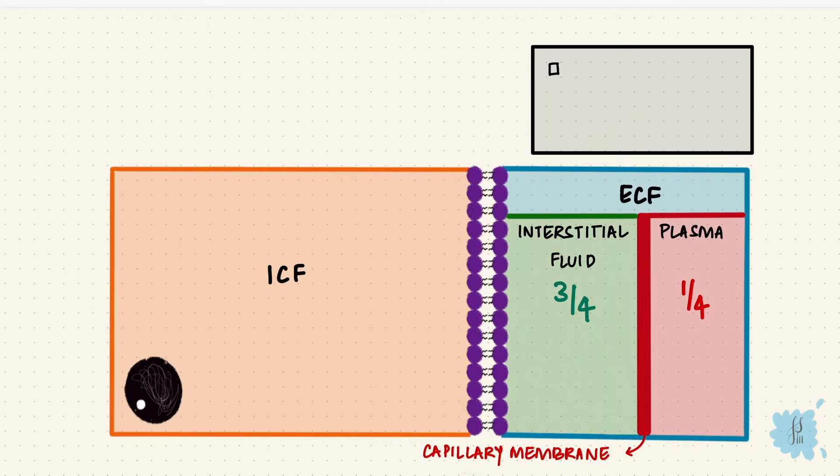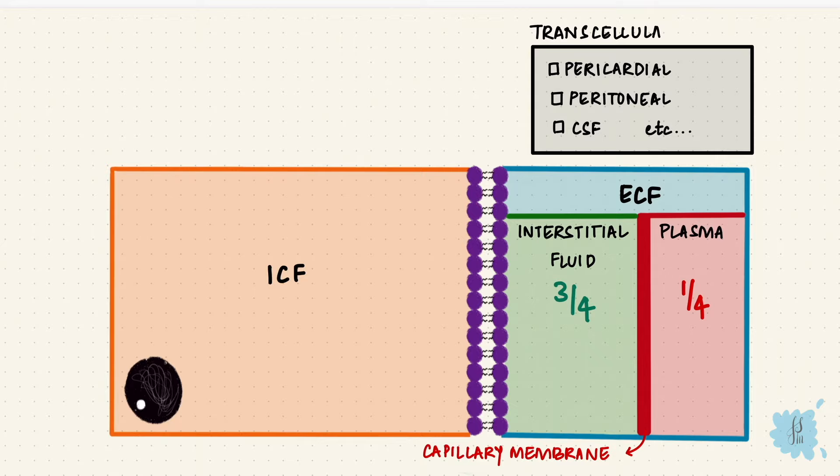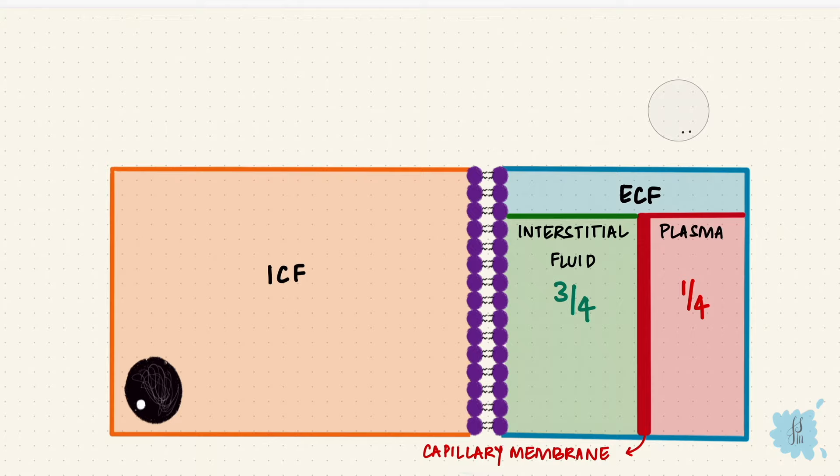There's also fluid in the pericardial cavity, the peritoneal cavity, and there's the cerebrospinal fluid. These kinds of fluids form another compartment called the transcellular compartment, which is a small part of the extracellular fluid. For now, we're going to focus on the ICF, the ECF, the interstitial fluid, and the plasma.